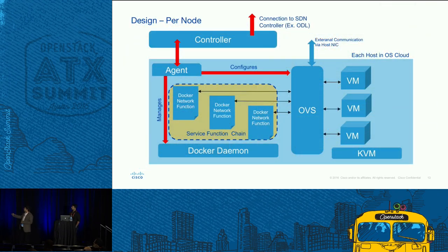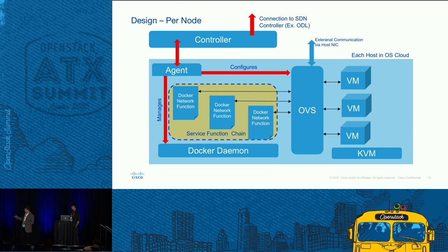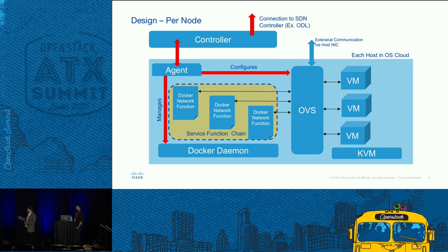This is the node design. The controller talks via its northbound APIs to the southbound of any kind of SDN — ODL or similar. The controller would talk to the agent, with one controller and one agent per host. The agent would actually configure OVS — the Open vSwitch — which is shared between Docker and KVM. The agent also manages Docker, meaning it can spawn network functions on top of Docker. You would have different network functions that you could chain by using OpenFlow rules, and your traffic could go out through that chain. That is the basic node design.